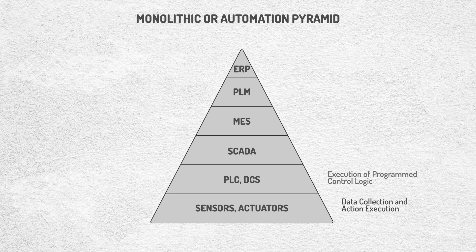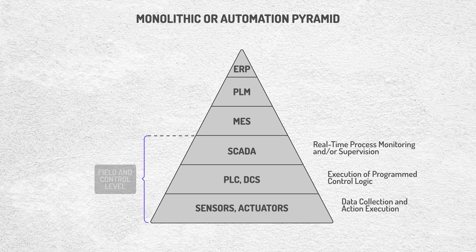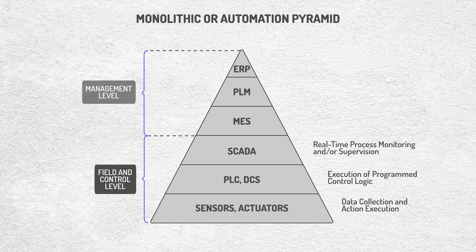The PLC and DCS level executes the control logic based on the data received from the lower level. The SCADA level allows monitoring and controlling of industrial processes. These three levels correspond to the field and control level. Above, we have the management level, which includes MES, that coordinates, tracks, and optimizes production in real time.